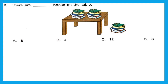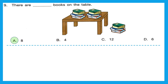Question 9: 'There are dash books on the table.' We have to count only the books that are on the table, not the ones lying down. Counting: 1, 2, 3, 4, 5, 6, 7, 8. So the right option is A, 8.